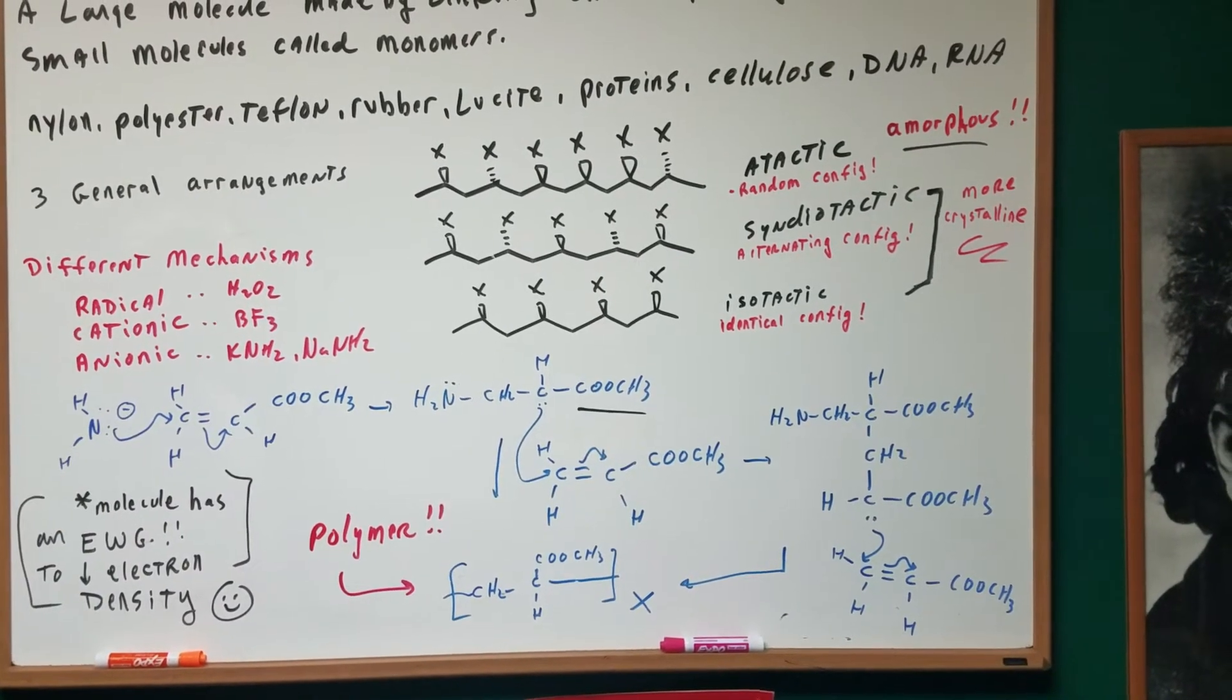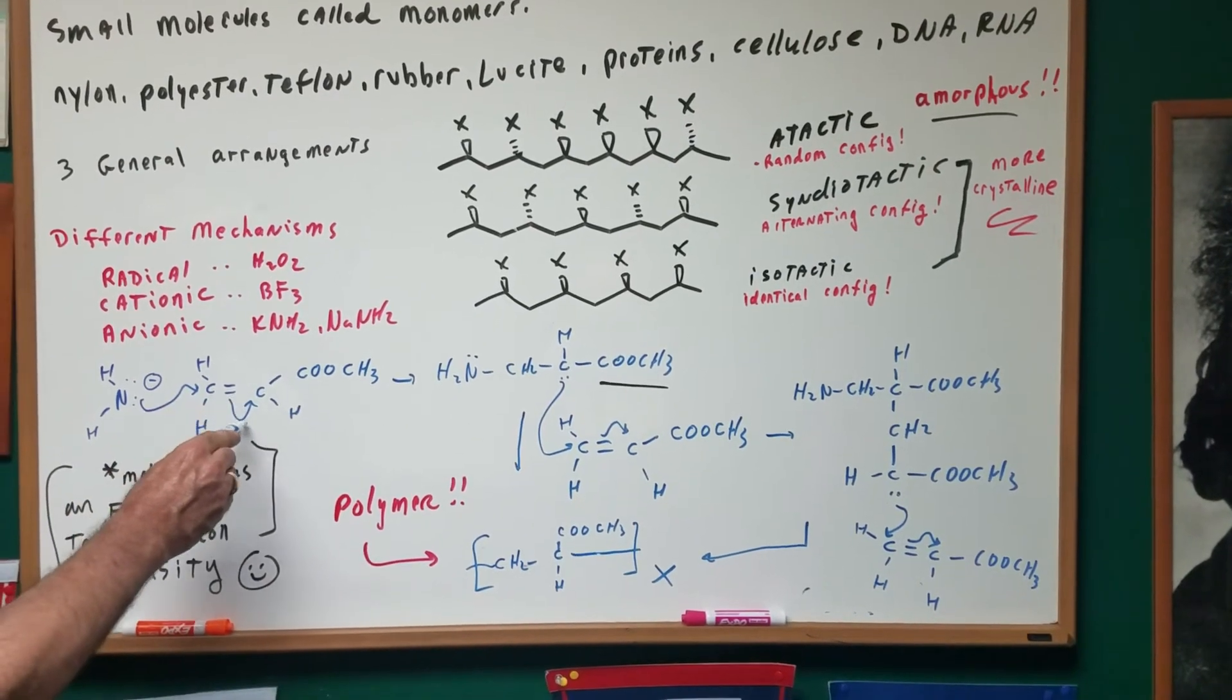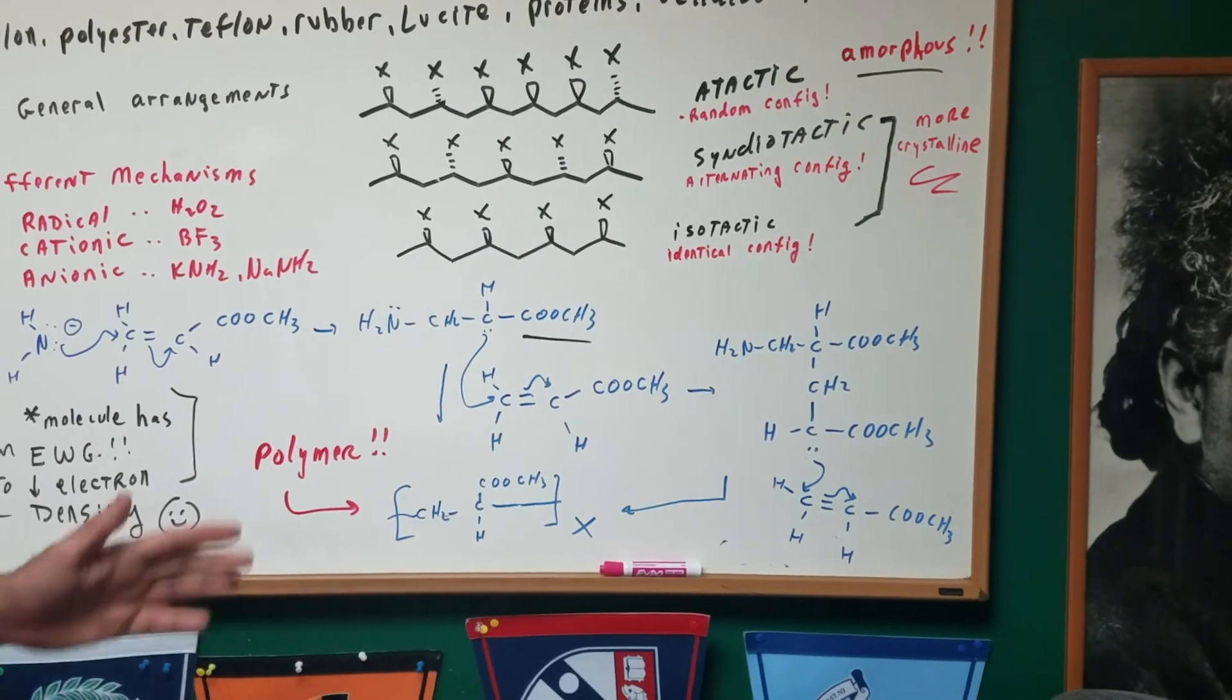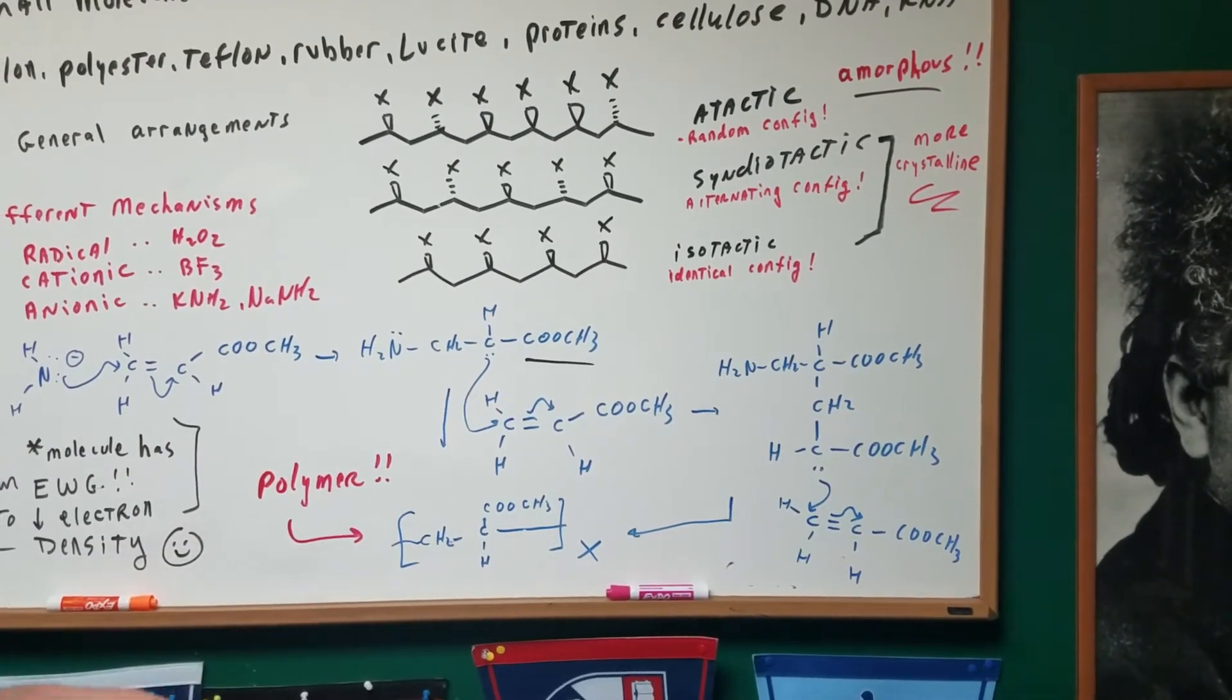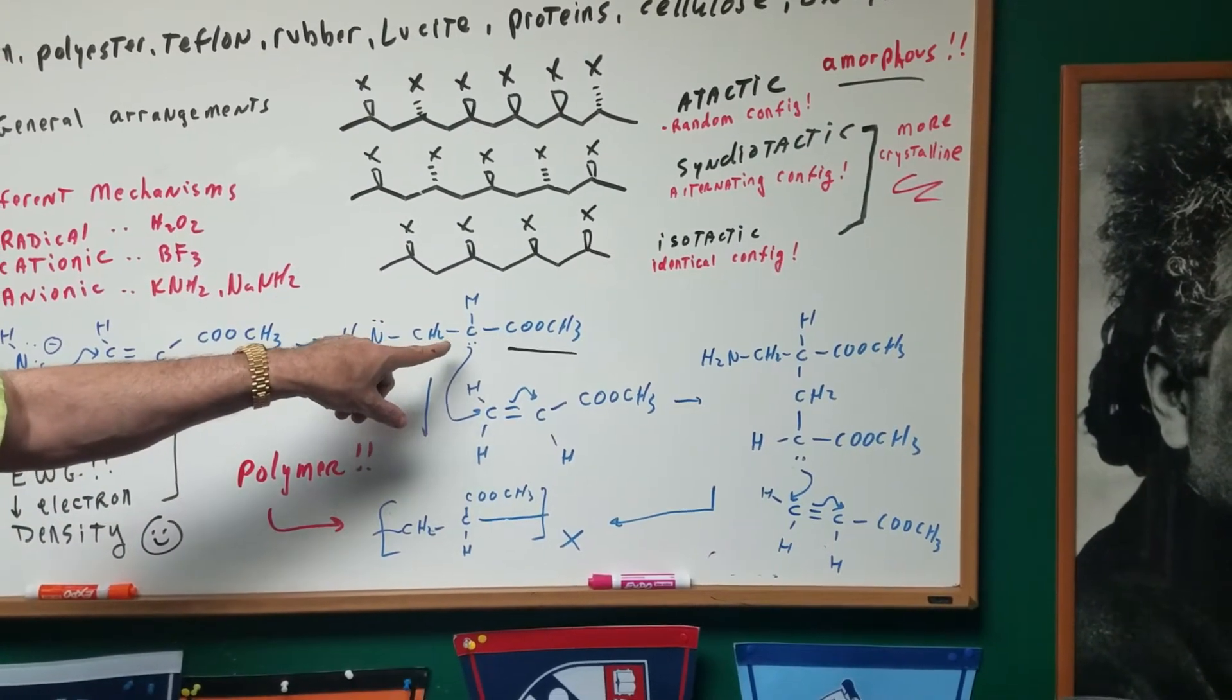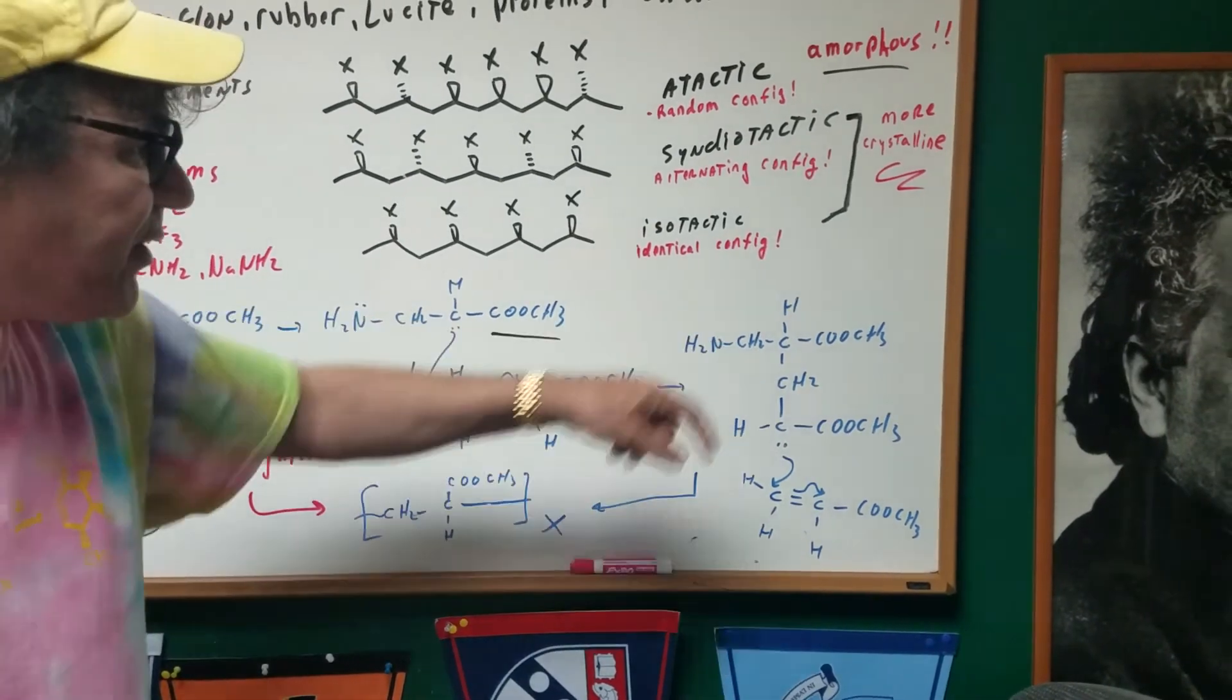So, as you can see, when I do the attack, I attack the carbon of the alkene. The electrons move over, and I form a carbanion that's stabilized by this electron withdrawing group. Once we have a stabilized carbanion, we're ready for our next cycle. This can attack a second molecule to give us this.